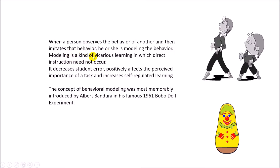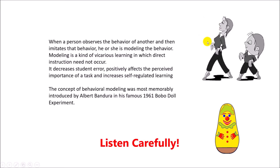Now, let's try to understand what the model actually is. The teacher is modeling — without telling, indirectly, the teacher gives a hint to the child to imitate and observe the teacher. The child doesn't know that the teacher is doing this so that they can learn.